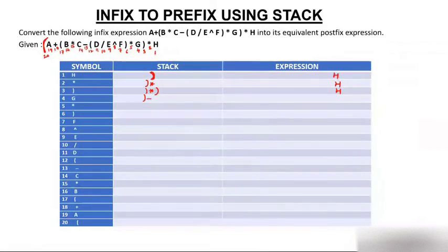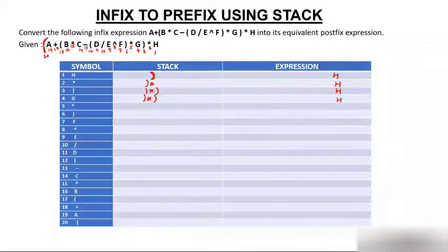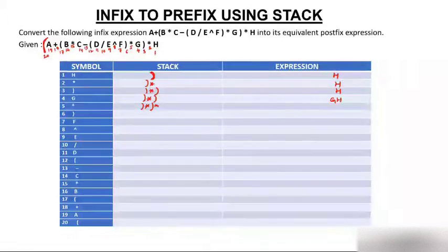Next comes operand g. Since g is an operand, it goes to the expression from right to left, giving us g, h in the expression. Then another multiply (*) comes onto the stack on top of the existing star. We are left with g and h in the expression.